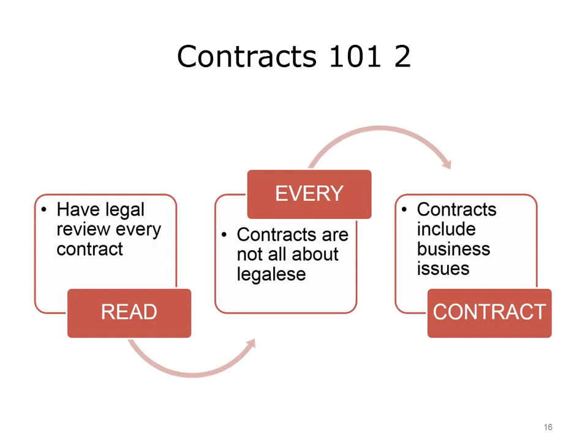Take time to read every contract, or have someone you trust read it for you, provide a summary of key points, and make sure issues are being tracked. If legal counsel is available, have them review all contracts. Contracts are not all about legalese — many people perceive them as arcane legal terms that only attorneys understand, such as limits of liability or force majeure. Force majeure is a French term meaning superior force, defined by Dictionary.com as an unexpected and disruptive event that may excuse a party from a contract. There is some legalese in every contract for lawyers to review, but there is also a whole lot of business issues they don't care about.